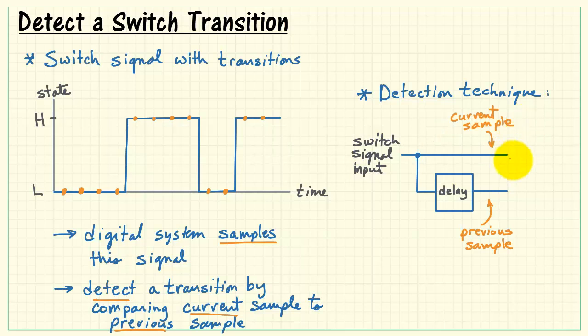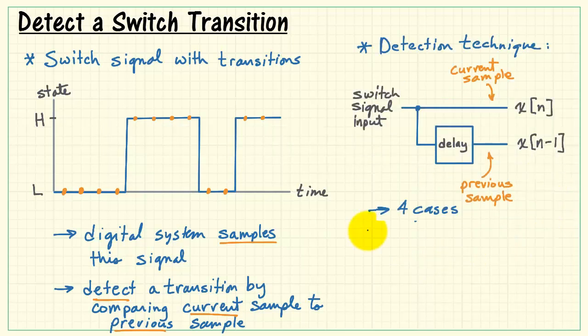Let me label the path with the current sample as x of n and the previous sample is x of n minus 1. And this would be standard notation for especially DSP or digital signal processing flow diagrams.